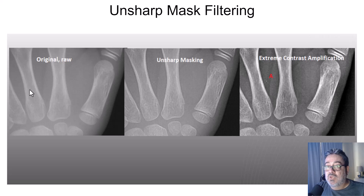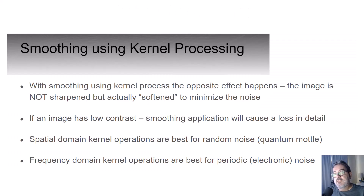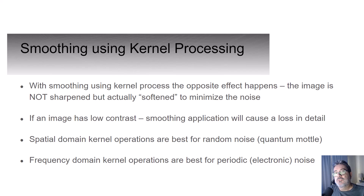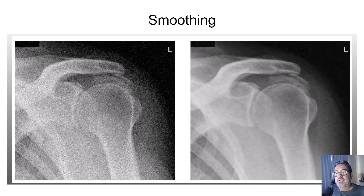Smoothing uses kernel processing to produce the opposite effect of edge enhancement and minimizes noise. With edge enhancement you get sharper images but more noise; with smoothing you won't have sharp edges but you won't see noise at all. There are two types of noise. The best way to rid the system of quantum mottle is to use spatial domain kernel operations — in other words, increase your mAs, as you need higher exposure to the image receptor to remove mottle. Frequency domain kernel operations are best for electronic noise, and that fix happens in the software system. In the smoothing example shown, the image is still not crisp and looks slightly blurry, but the graininess and image noise are gone.